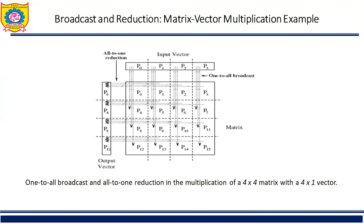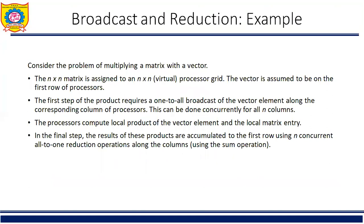In this matrix vector multiplication, consider the problem of multiplying the matrix with vector where an n by n matrix is assigned to an n by n processor grid. The vector is assumed to be on the first row of the processor. The first step of the product requires one to all broadcast of the vector element along the corresponding column of the processor. This is done concurrently for all n columns. The processors then compute the local product of the vector element and the local matrix entry.